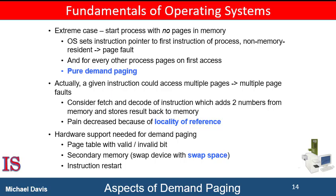A crucial requirement for demand paging is the ability to restart any instruction after a page fault. Because we save the state — registers, condition code, instruction counter, and so on — of the interrupted process when the page fault occurs, we must be able to restart the process in the same place and same state, with the desired page now in memory and accessible. If the page fault occurs on the instruction fetch, we restart by fetching the instruction again. If it occurs while fetching an operand, we must fetch and decode the instruction again and then fetch the operand.